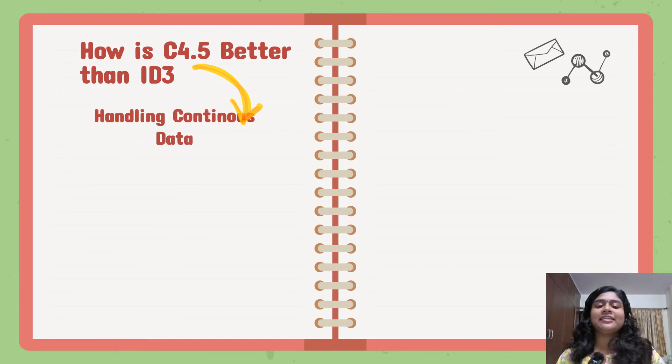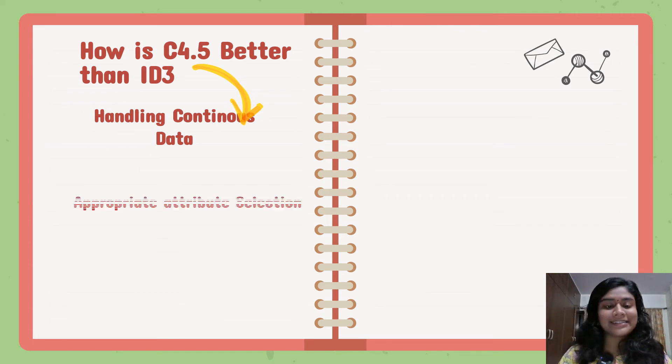How is C4.5 better than ID3? It easily handles continuous data. The best part about C4.5 is that it can handle discrete as well as continuous data. So in case of continuous data, what it does is it creates a threshold. And from that threshold, it measures different variables and then it assigns a particular value to those variables. In this way, it handles the continuous data.